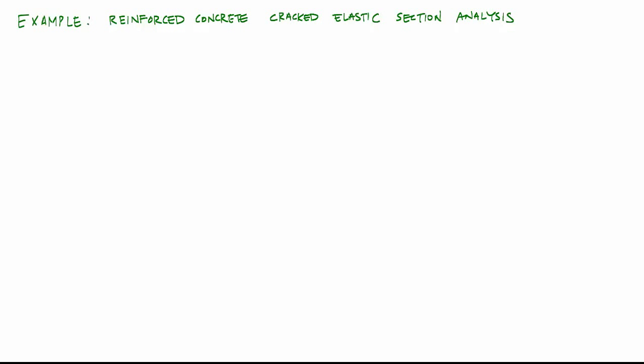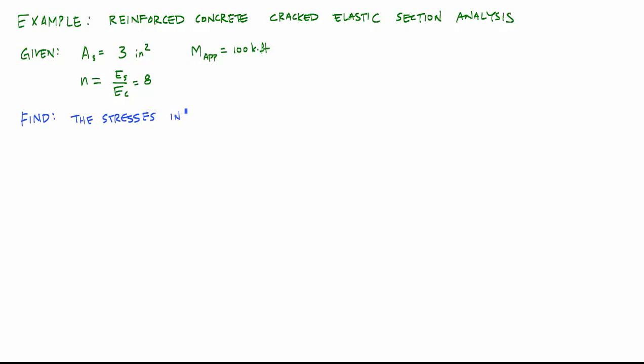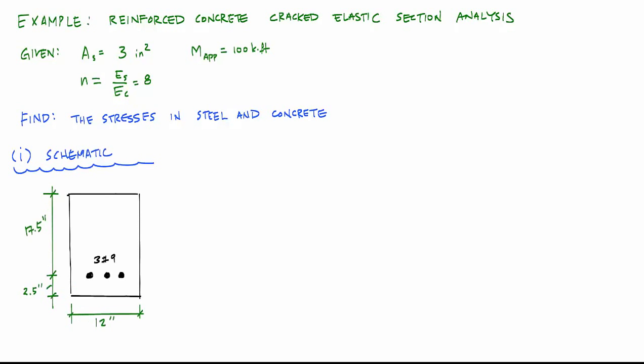Welcome back to Structure-Free Learning. In this video we're going to do a reinforced concrete analysis problem — a cracked elastic section analysis. We're given that the area of steel in tension is three inches squared with three number nine bars, the modular ratio is approximately eight, and the applied service moment is 100 kip-feet. We want to find the stresses in the steel and the maximum compressive stress in the concrete. The cross-section has a depth from the extreme compression fiber to the tension steel of 17.5 inches, an overall height of 20 inches, and a width of 12 inches.